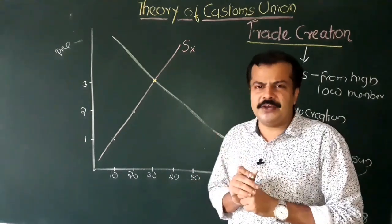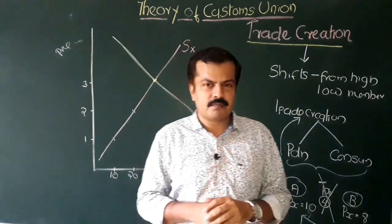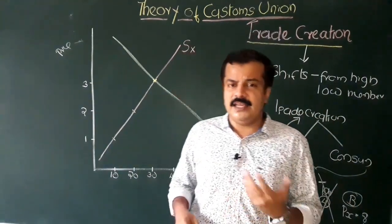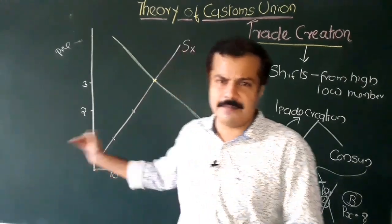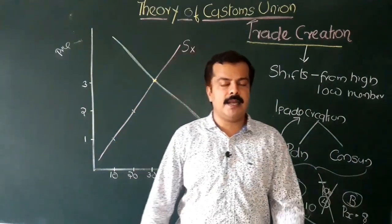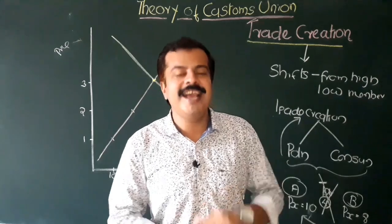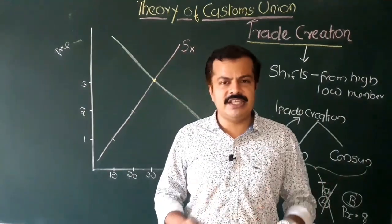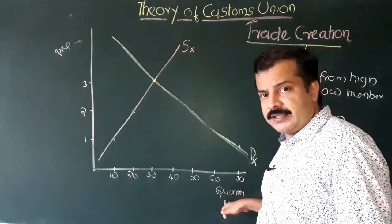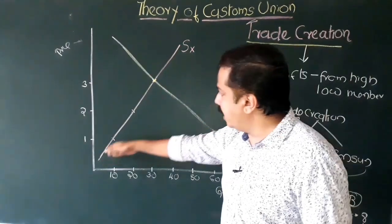Now let us shift our focus to some kind of analysis using the demand curve as well as the supply curve. We are talking about the case of Country Two, which imports commodity X. We know that Country Two is a capital-abundant country which specializes in the production of commodity Y — a capital-intensive commodity — and this country imports commodity X. Initially, we have a situation of only domestic production and consumption. We measure the quantity on the X-axis and the price on the Y-axis. We have a downward-sloping demand curve and an upward-sloping supply curve.